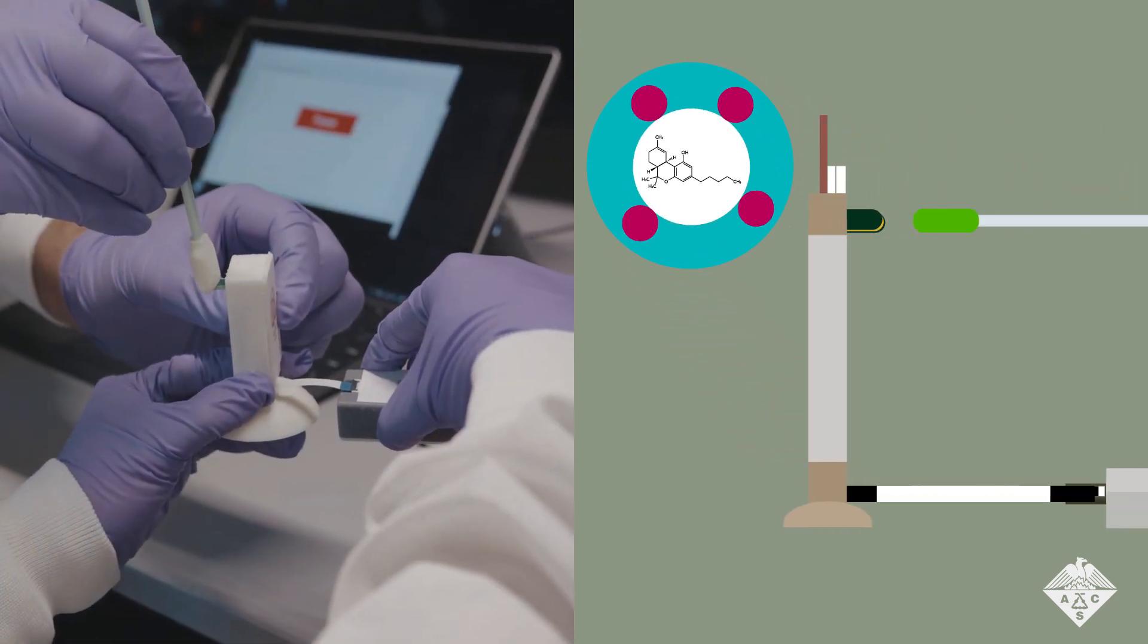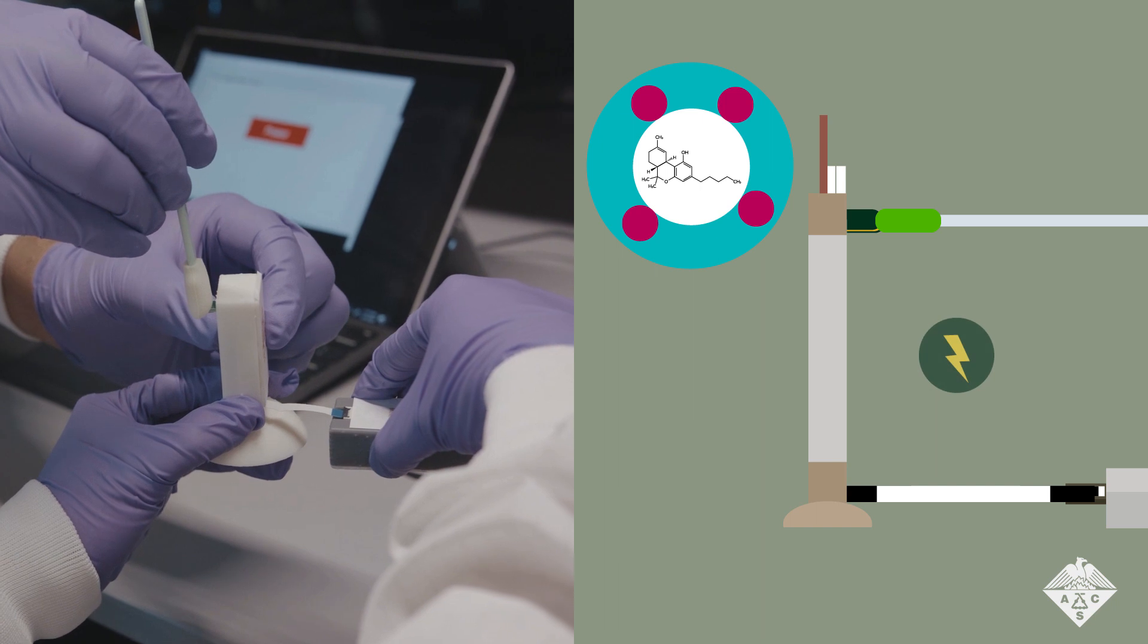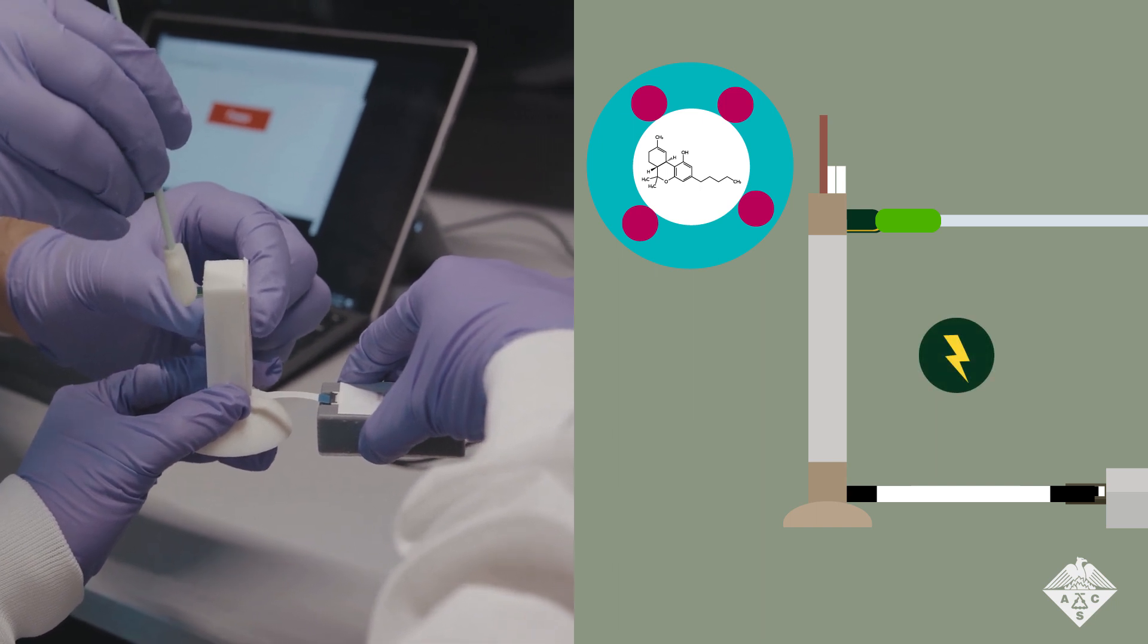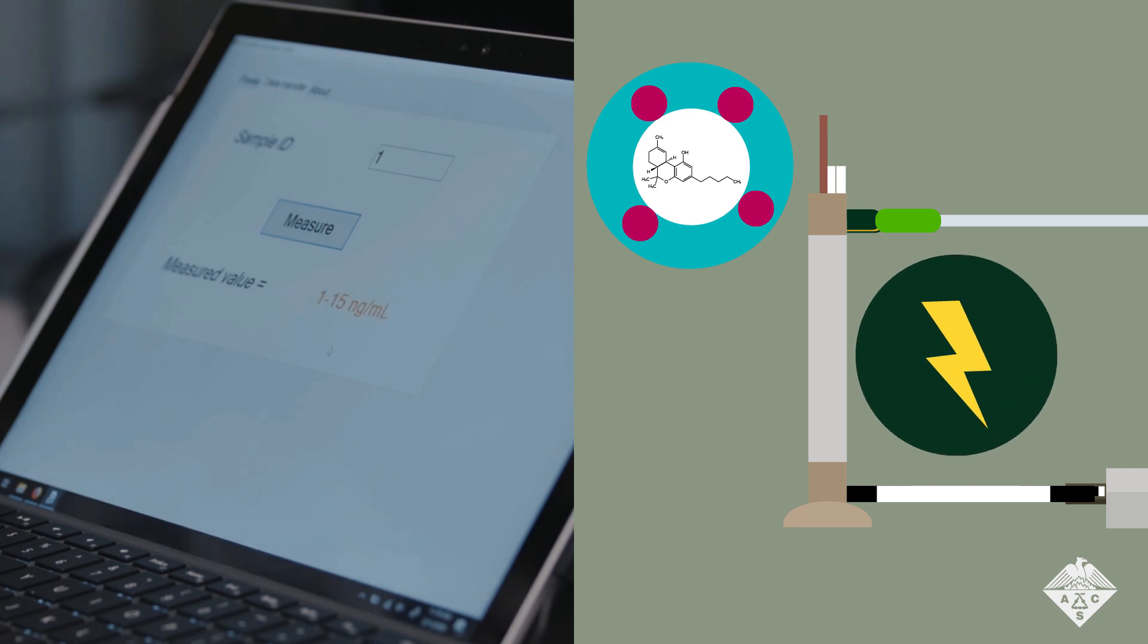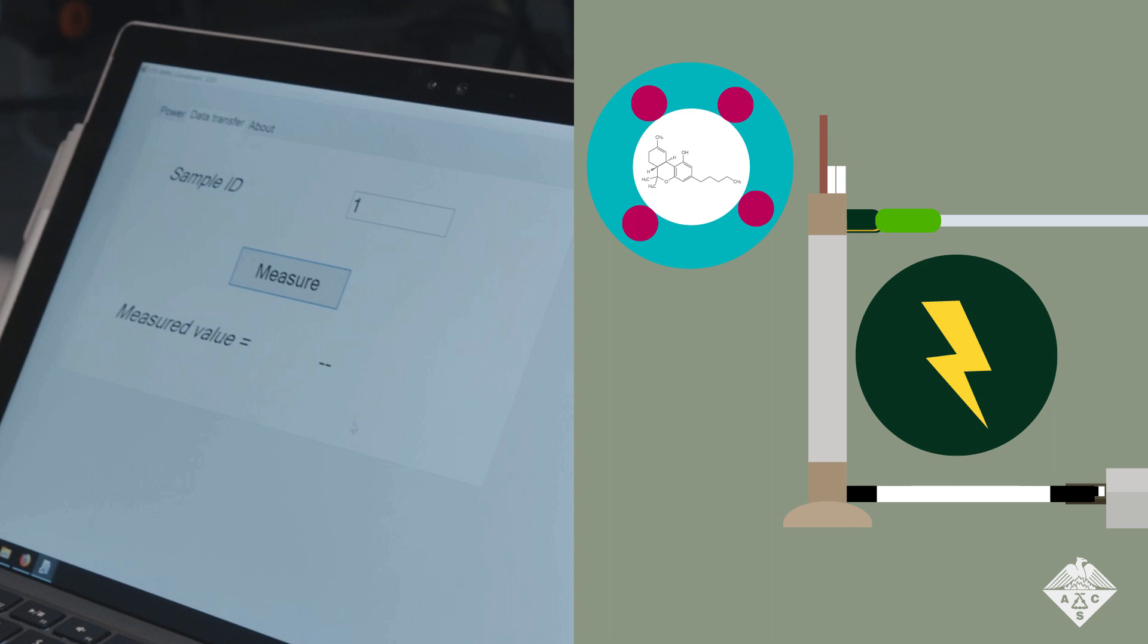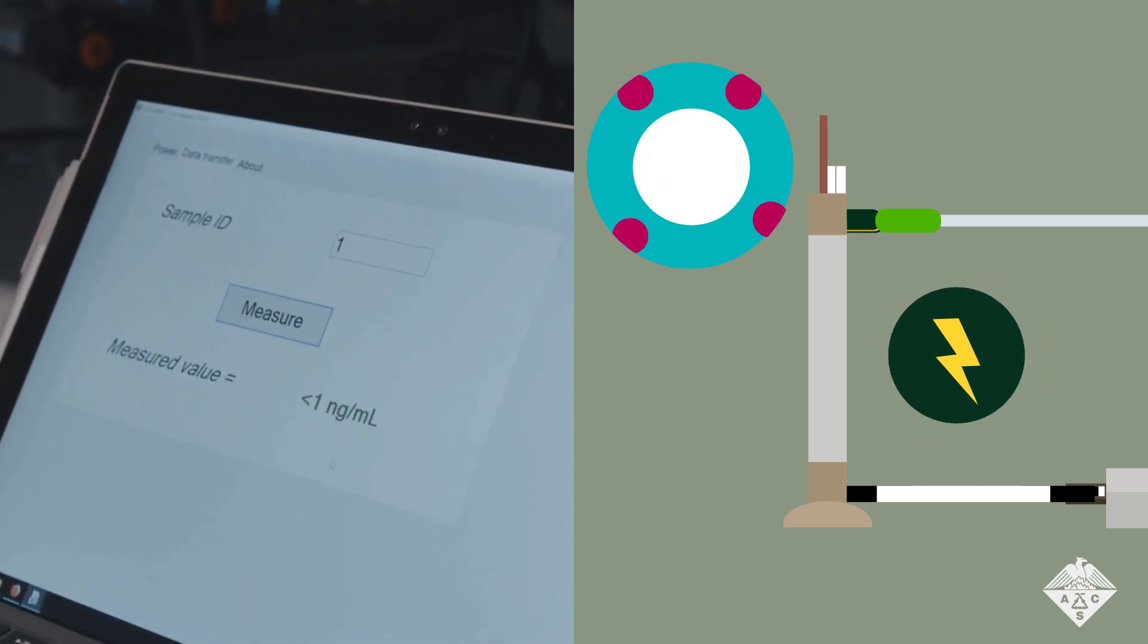Then the strip is placed in an electronic reader that applies a voltage. Proteins with bound THC behave differently, so there's an increase in electrical current which can then be converted to THC concentration. If no THC is present, there's no binding and no change in current.